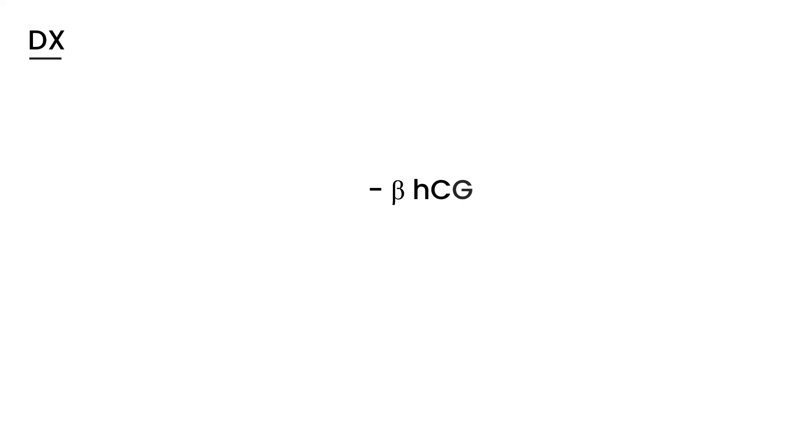So if you have a female of reproductive age presenting with those symptoms, how do you diagnose it? There are two main tests: the first is a urine pregnancy test, known as a beta-hCG, and the second is a pelvic ultrasound. These two tests are what you would order when you suspect an ectopic pregnancy.